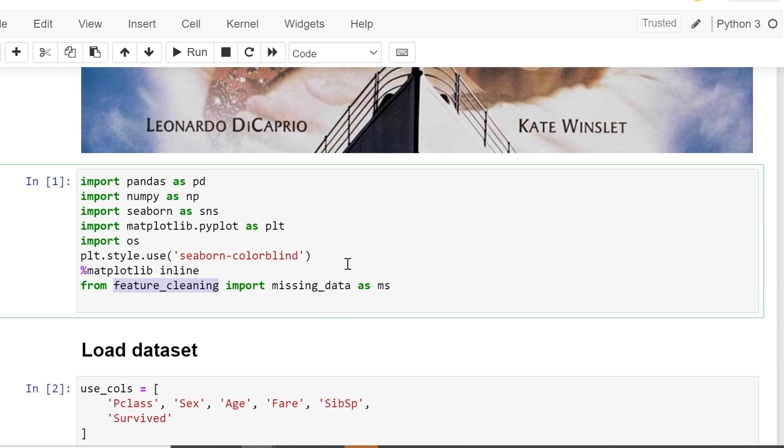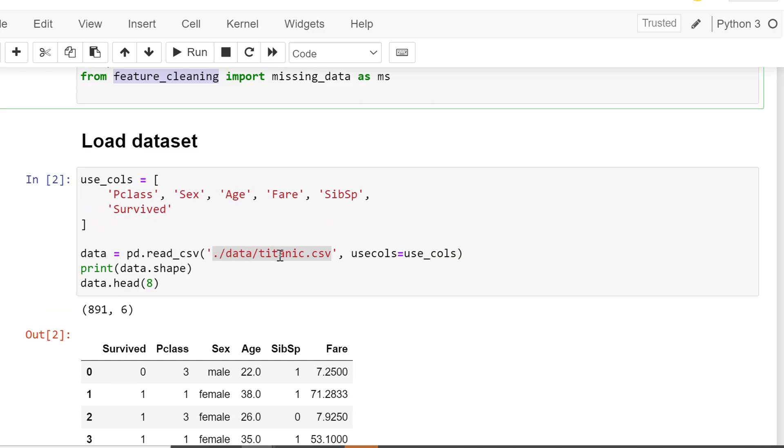I'll show you that class and how it looks like. For now, let's load the dataset. We have a dataset, titanic.csv. We're just loading the data and looking at the initial eight rows. Shift-Enter. This is how the data looks like.